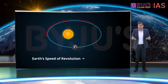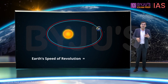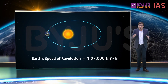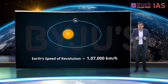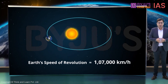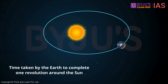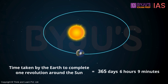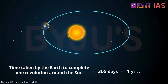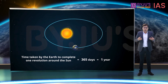Earth's speed of revolution is roughly around 107,000 kilometers per hour. How much time does Earth take to complete one full revolution around the Sun? To be precise, it is 365 days, 6 hours, and 9 minutes — but generally we consider it to be about 365 days, which is equal to one year according to the Gregorian calendar.